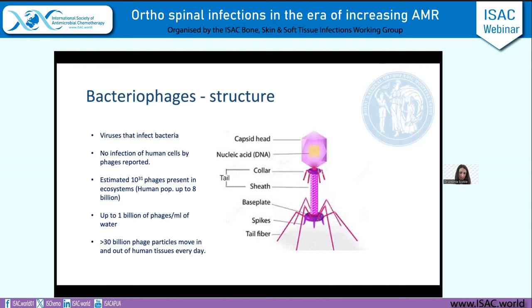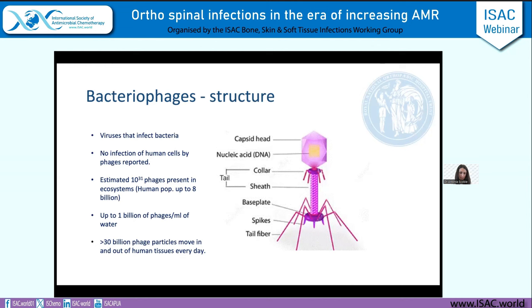A bacteriophage is essentially a virus that infects bacteria, and it only infects bacteria — there has never been a reported human or eukaryotic cell affected by a bacteriophage. To give you an idea of the vast numbers: there are almost 10 to the power of 31 phages estimated to be in the ecosystem. You can get up to a billion bacteriophages in just a milliliter of water, and over 30 billion phage particles can move in and out of our human tissues every day.